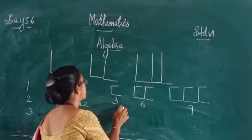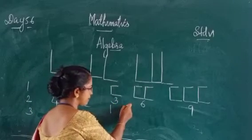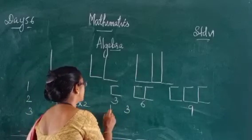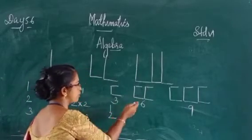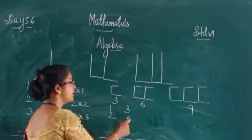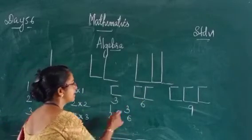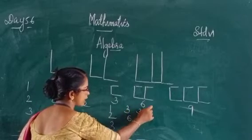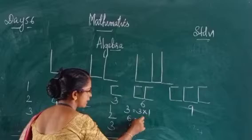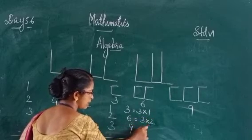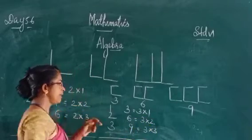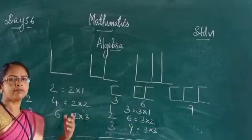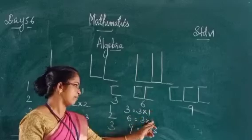For making one C, how many matchsticks? Three matchsticks. For forming two C's, how many matchsticks? Six matchsticks. For three C's, how many matchsticks? Nine. So three into one, then three into two, then three into three. Here, three is fixed; the number of C's is not fixed — it is variable.